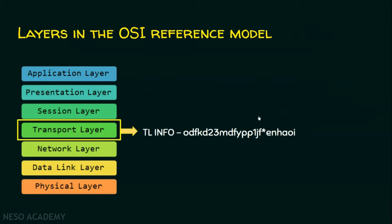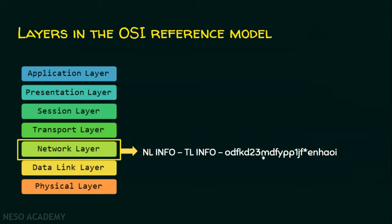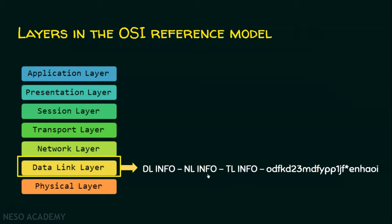Now this information is given to the transport layer, which adds transport layer information. After that, the entire content is given to the network layer. With the transport layer information and the data received from the higher layers, it adds network layer information. Then the entire content is given to the data link layer, which adds data link layer information. We can observe that the actual data, which was converted into an unreadable format by the presentation layer, now has transport layer, network layer, and data link layer information all added — and this is the entire content of the data that is going to be sent.